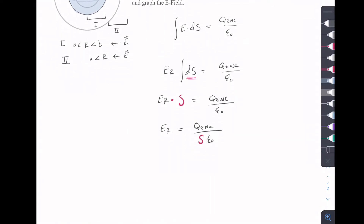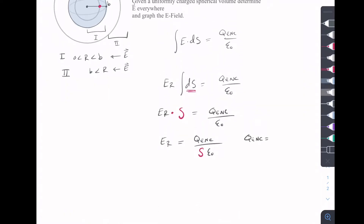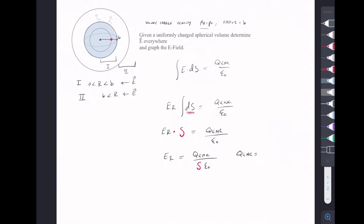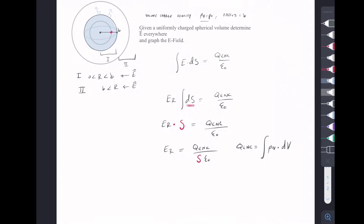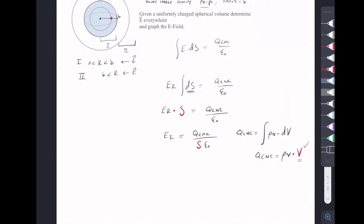So what is the last thing that we need to find? We need to find our Q enclosed. In this case we have a volume charge density because we have a sphere and the sphere is a volume. So the volume charge density means that we're going to integrate the volume charge density over the volume, and that's going to be multiplied by the volume. The radius for this volume is going to be the same because we're enclosing a smaller chunk of charge.